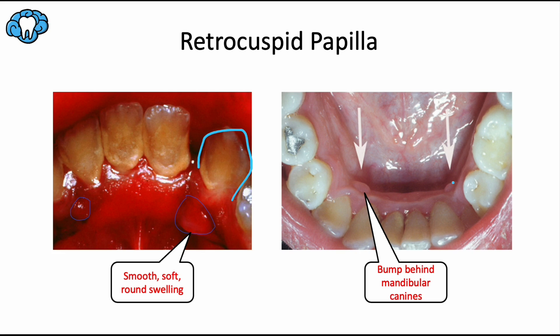The retrocuspid papilla is currently believed to be a normal anatomic variant behind the mandibular canines. Interestingly, these lesions look a lot like giant cell fibromas both clinically and under the microscope, because they have stellate or star-shaped multinucleated fibroblasts, or giant cells, which is a prominent histologic feature of the giant cell fibroma. But as of now, we are calling this a variant of normal anatomy.